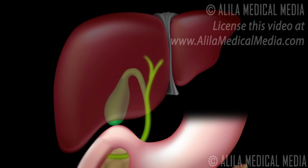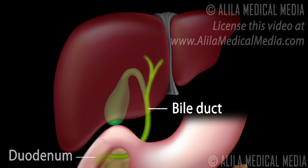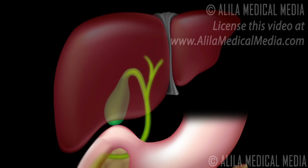Bile flows through the bile duct into the duodenum, the first part of the small intestine. After filling the bile duct, it overflows into the gallbladder where it is stored for later use. After a high-fat meal, the gallbladder contracts to pump bile into the duodenum.